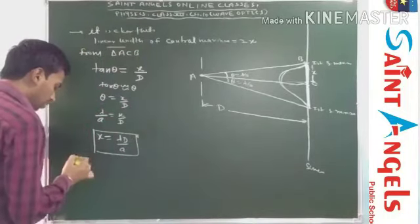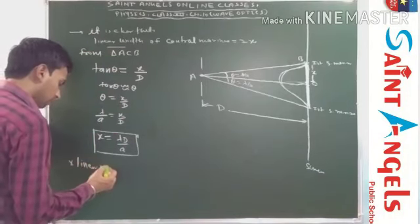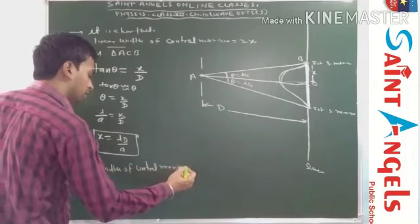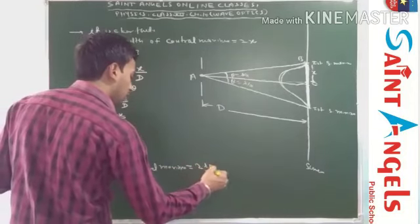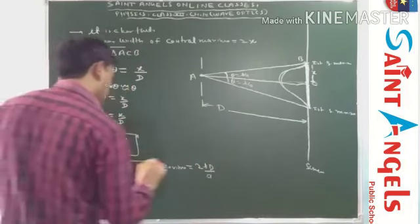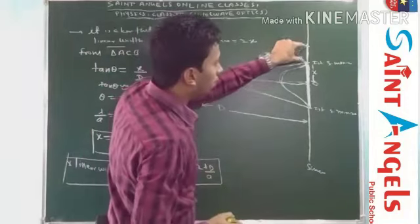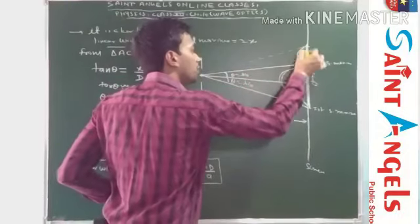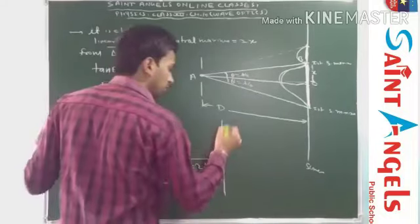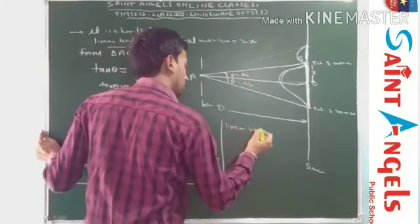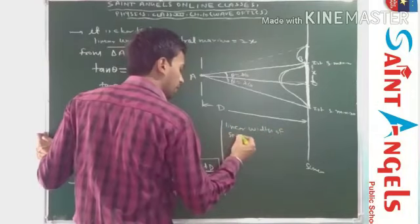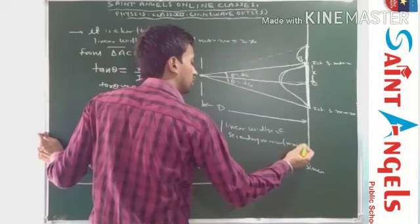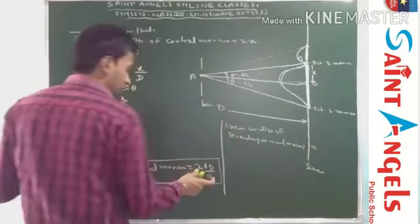So the linear width of central maxima is equal to 2λD/A. Since the angular width of secondary maxima is half of central maxima, the linear width of secondary maxima is also half — that is, the linear width of secondary maxima is λD/A.